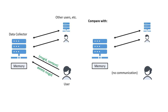What we want to do is compare what happens in this world to what happens in a different world where the user never sent this data in the first place. In some sense, the definition will say that the knowledge everyone else has after the data collector has processed the deletion request looks like the state of the world where the data was never sent. We call these the real world and the ideal world — the real world in which deletion happens, and the ideal world in which the data was never even sent.